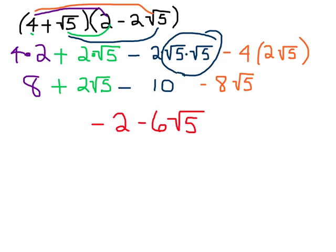Let's do another one. I tried to do this one in some different colors so that you could kind of keep track with me. So I've got 4 times 2 here in the purple — that's the first term times the first term, and that's 8. Then I've got the square root of 5 times 2, which is in the green, and that's 2 square root of 5. And that can't be simplified.